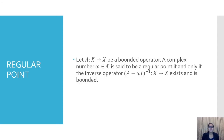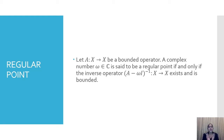First we shall discuss the definition of a regular point. A regular point is related to a bounded operator. Suppose we have a bounded operator A. Then any complex number omega, element of C, is said to be a regular point if and only if the inverse operator (A − ωI)⁻¹ exists and is bounded. In other words, omega is a regular point if A − ωI is an invertible and bounded operator.